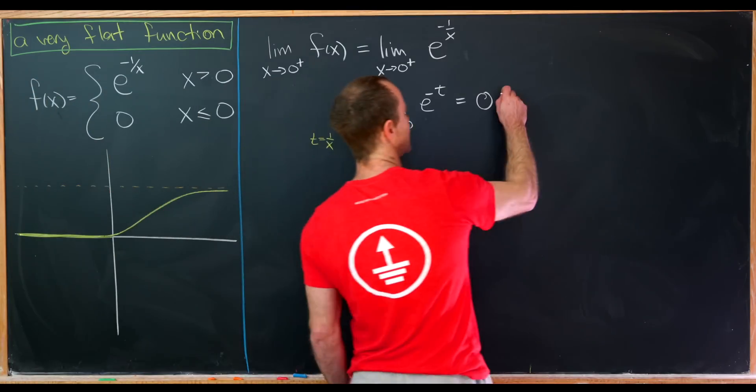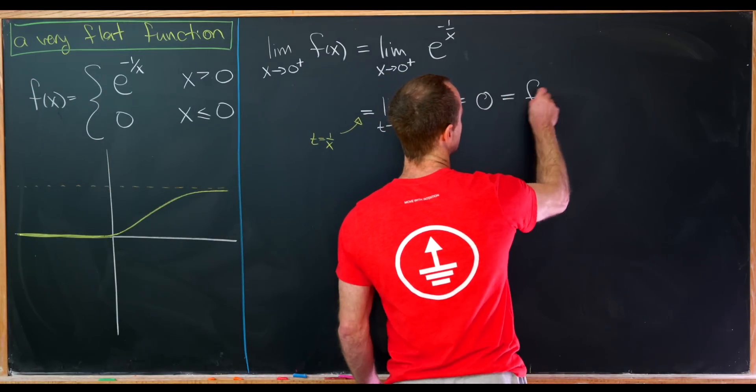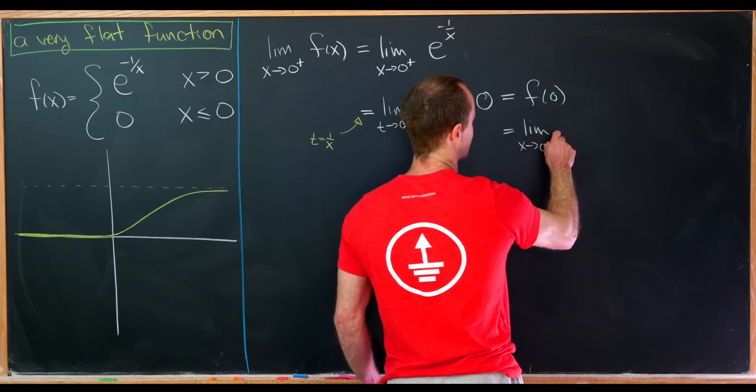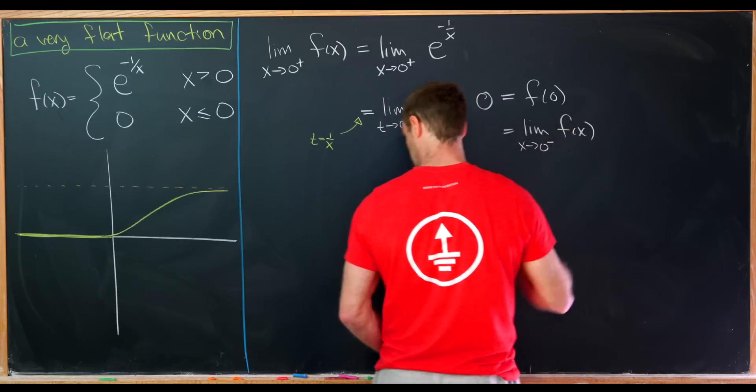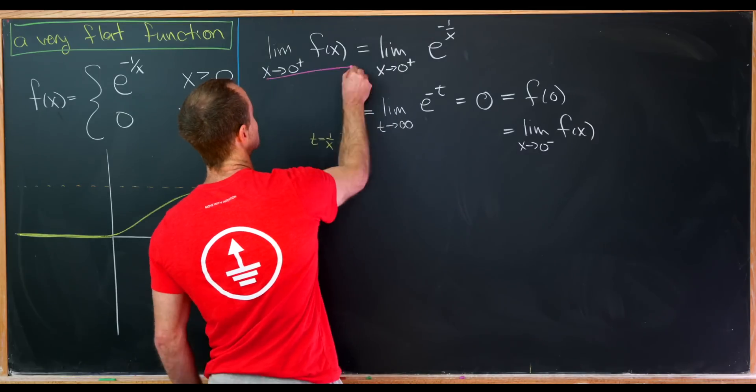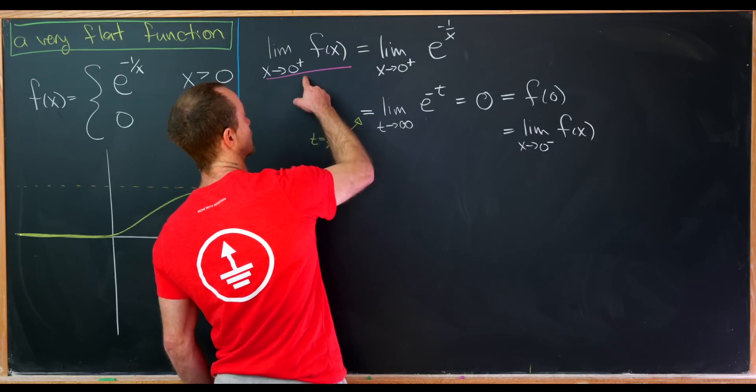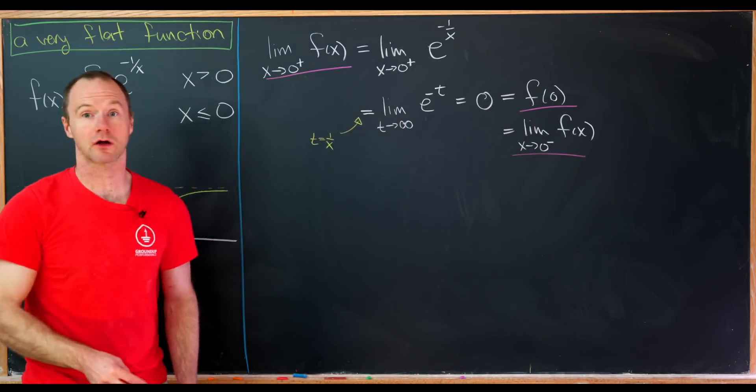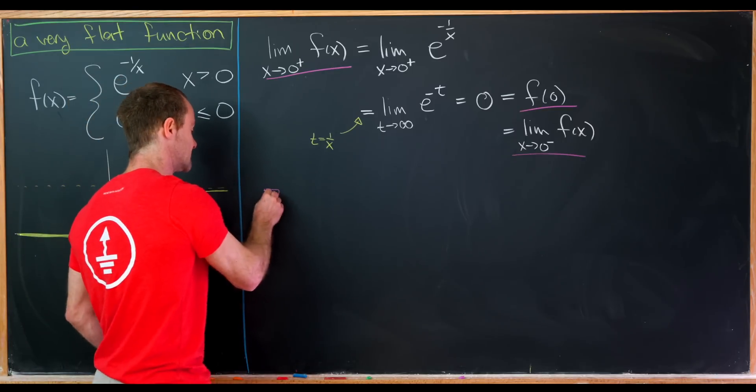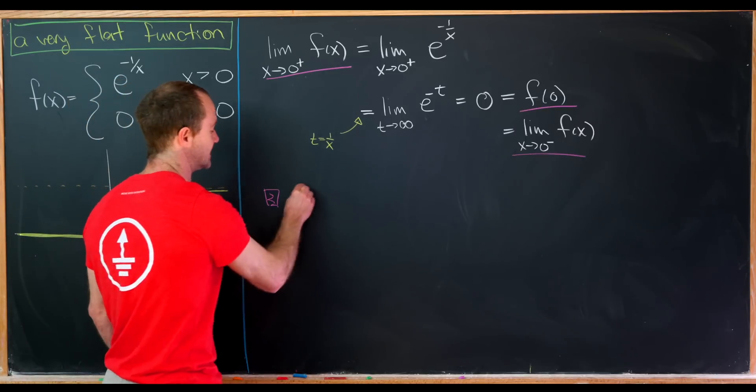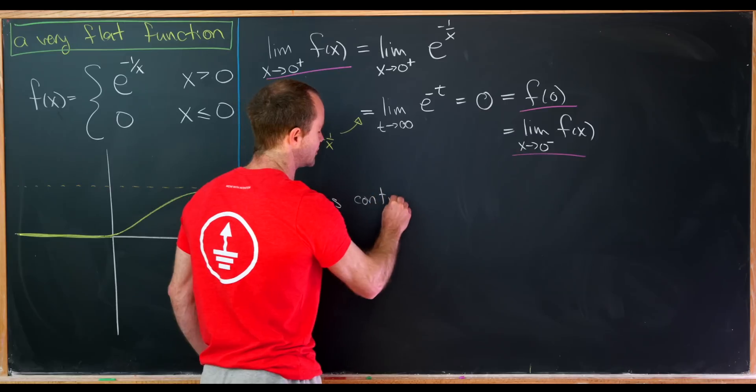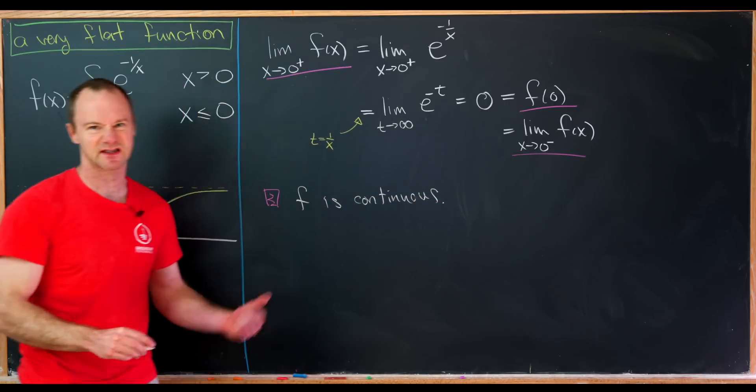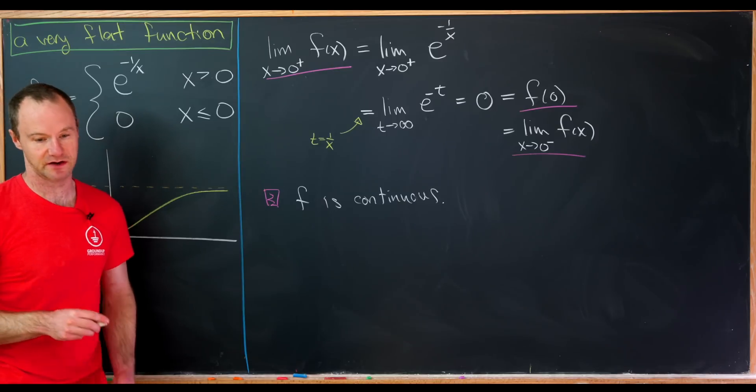But like I said, that's equal to two things. That's equal to f of zero, and it's equal to the limit as x goes to zero from below of f of x. So the fact that this limit here, this right-handed limit, the value of the function, and the left-handed limit are all coincidental tells us that this function is continuous. Well, in fact, it really just tells us that this function is continuous at zero, but by our previous discussion, it's kind of obviously continuous everywhere else.